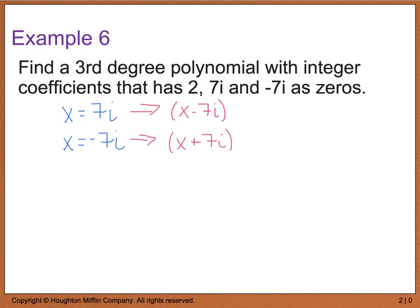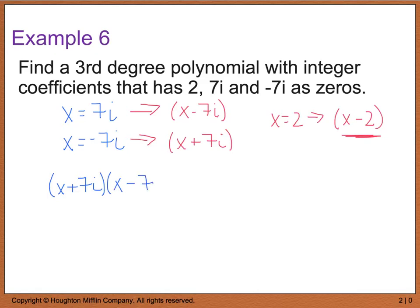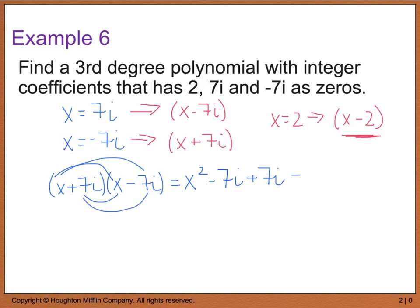While we're doing this, we also might as well deal with x equals 2, so x minus 2 is also a factor. Now I want to deal with the complex zeros first. If I deal with those first and multiply them together, I'm going to get rid of my complex numbers. So I have x plus 7i times x minus 7i. When we do that, we end up with x squared minus 7ix plus 7ix minus 7i squared. The positive and negative 7i's in the middle cancel out. Since i squared equals negative 1, negative 7 times negative 1 gives us plus 49.